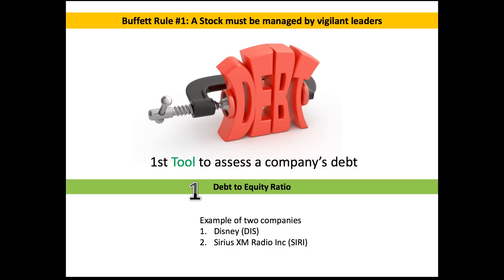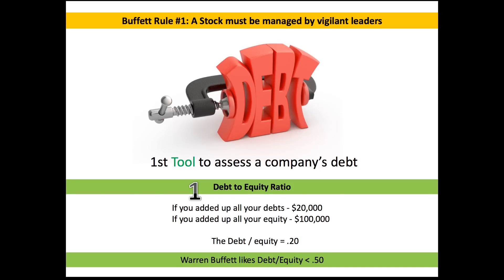Here's a quick overview of the debt to equity ratio in easy-to-understand terms. If you added up all of your debts right now — your credit card debt, your car loan, the loan on your home — let's say they all came to $20,000. That's your total debt side of the equation.